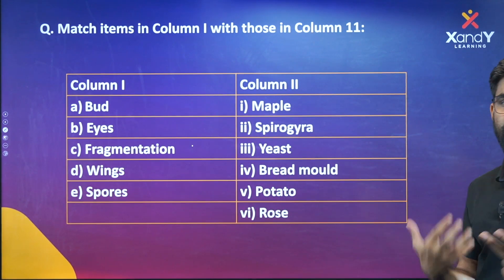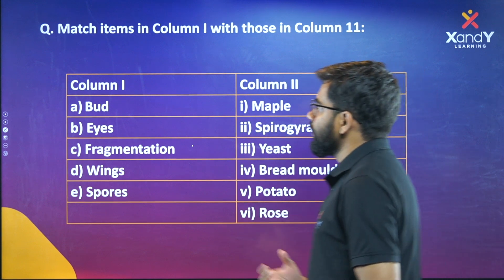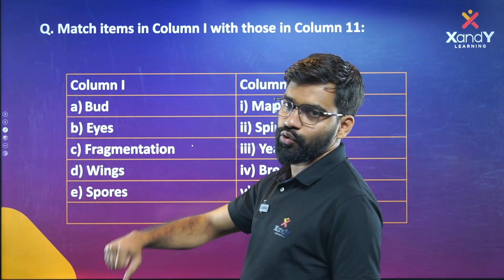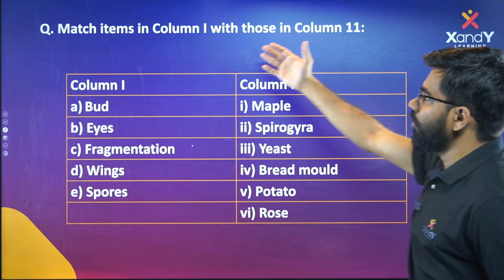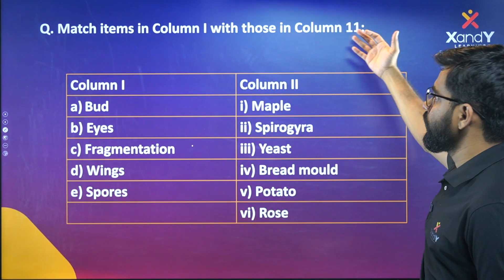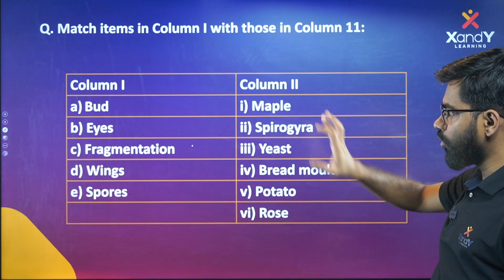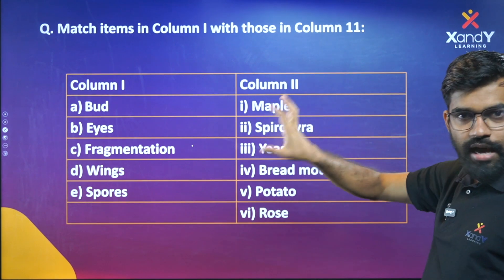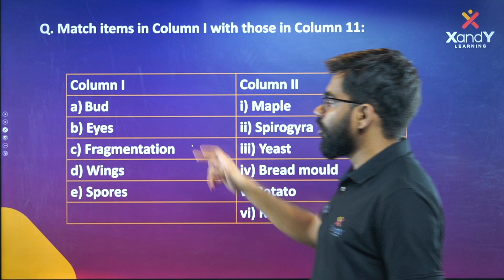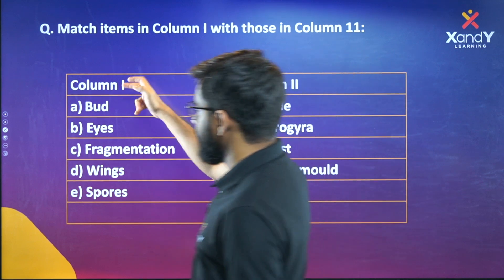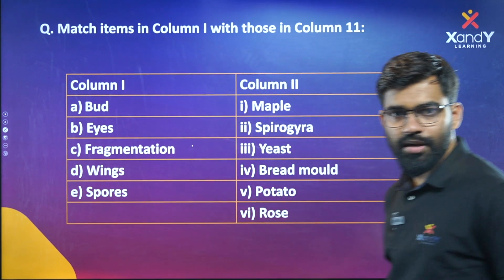We can do the reproduction in plants. Match the items in Column 1 with Column 2. Column 1 contains: Budding, Fragmentation, and Spores.